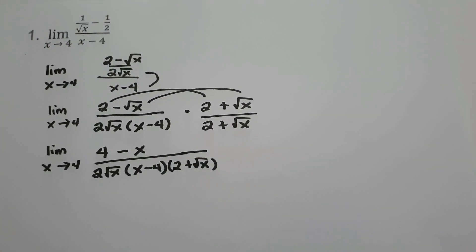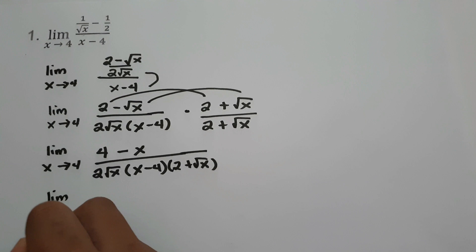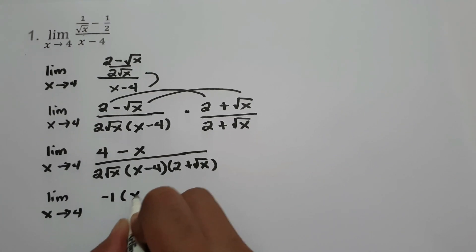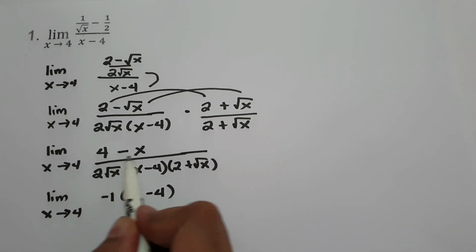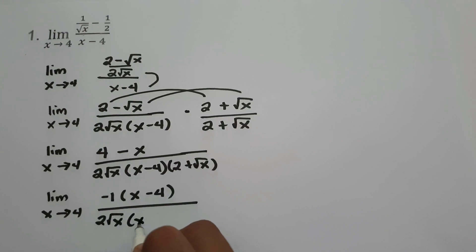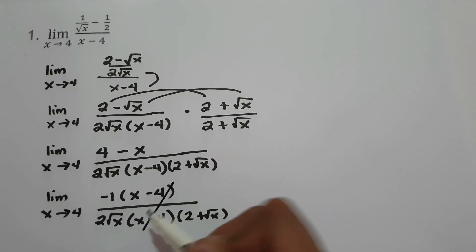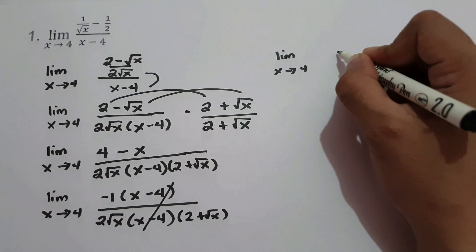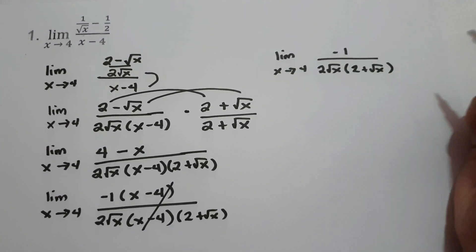To simplify, let us rewrite 4 minus x in the form of x minus 4. That is limit as x approaches 4. 4 minus x is the same as negative 1 times x minus 4 — if you multiply negative 1 by x minus 4, you get 4 minus x. The denominator is 2 square root of x times x minus 4 multiplied by 2 plus square root of x. Now let us cancel x minus 4.